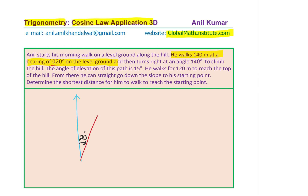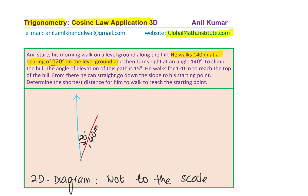So this is my 2D diagram — it is not to the scale, it's a very rough sketch. We know this is 20 degrees and he walks for 140 meters, so this distance here is 140 meters. Let us say this is the starting point, S. He reaches the point which is A for us.